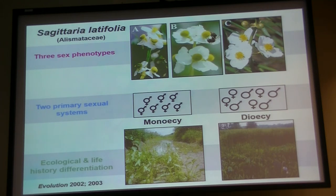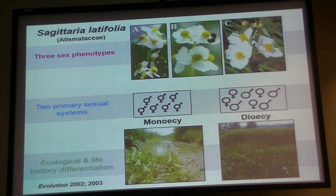Both are perennials, but the monoecious populations are fast growing, produce flowers quickly — usually in June and July. You could think of them as more r-selected, whereas the ones adapted to freshwater marshes tend to be bigger, delay flowering, and they are the dioecious populations. So that was the original story.